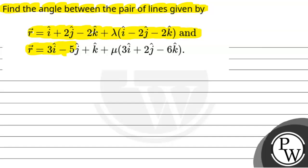and vector r is equal to 3 i cap minus 5 j cap plus k cap plus mu multiplied by 3 i cap plus 2 j cap minus 6 k cap.